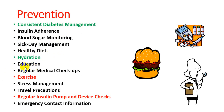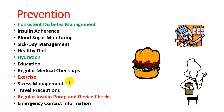We monitor blood glucose levels regularly. Regular medical checkups are necessary. We advise the patient to exercise — mild exercise like walking, yoga, etc. Stress reduction is important. Travel precautions regarding insulin and dietary management should be discussed. Patients should be counseled on regular insulin pump and device checks to ensure proper insulin delivery. Patients should also provide emergency contact information to their families so they can reach the hospital promptly.